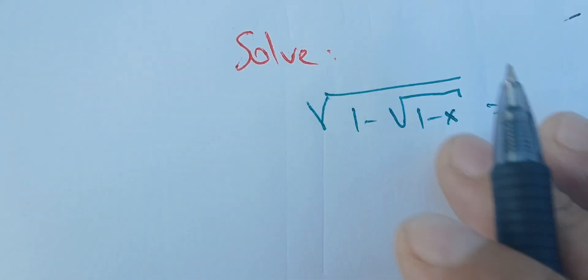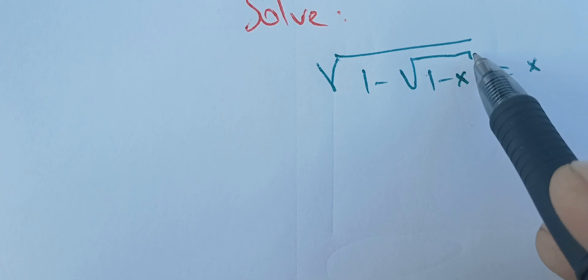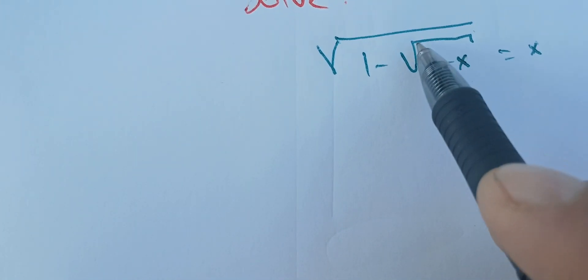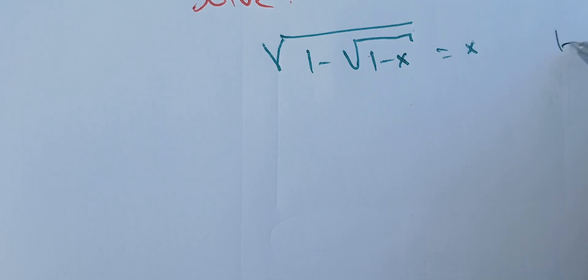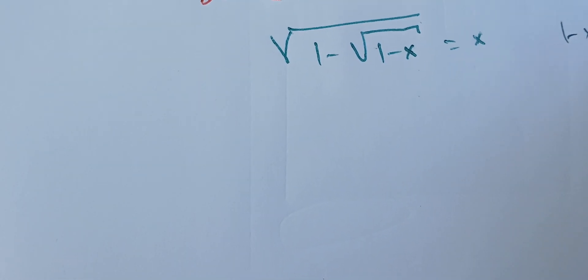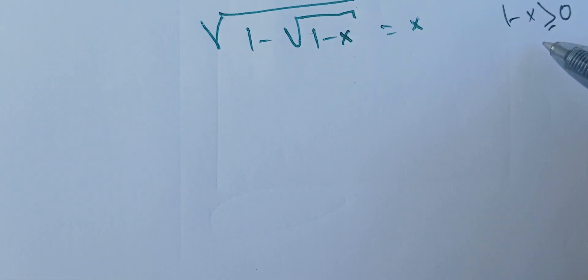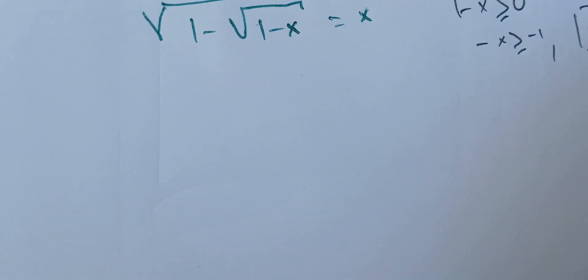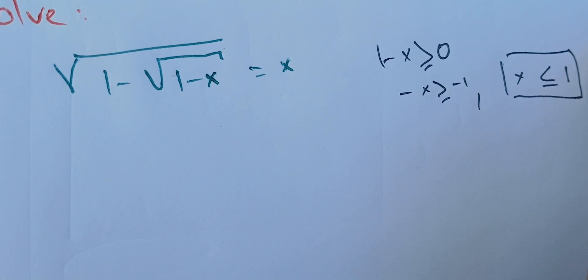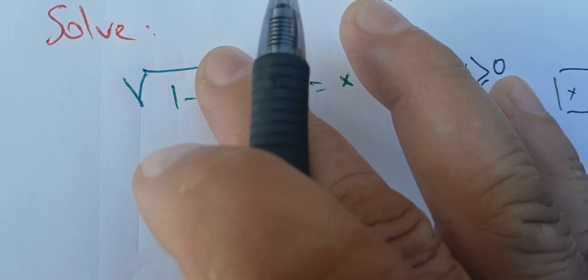The first thing we need to do is have the inner square root defined. That means we need 1 − x > 0, which means −x > −1, and this means x ≤ 1. So we need to keep this condition in mind while solving.